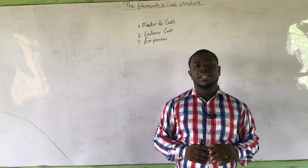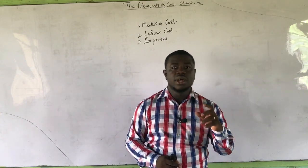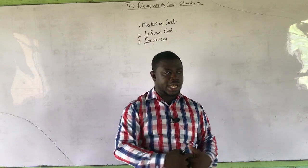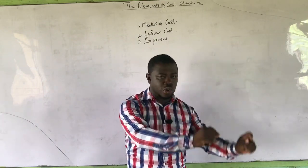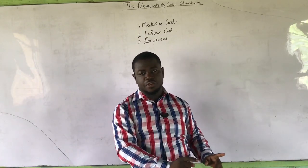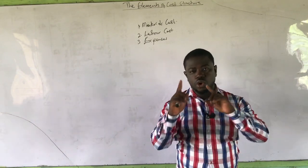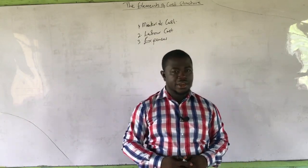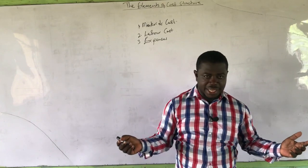Next is labour. There is a difference between labour and labour cost, just as with material. Labour has to do with the human efforts contributed towards the production of goods and services — that is the labour. But when we say labour cost, we are referring to the cost of labour — the cost of those human efforts contributed towards the production of goods and services. A lot of students use labour and material interchangeably without specifying whether they are talking about cost or just the labour itself.